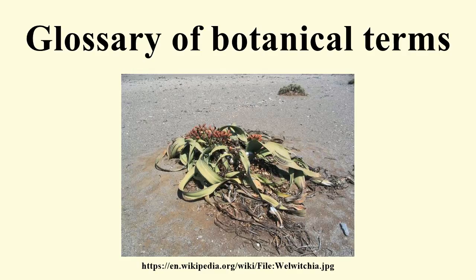Anisomery: the condition of having a floral whorl with a different number of parts from the other floral whorls. Anisotomous: branching with branches having unequal diameters, such as a trunk and its branch. Compare isotomous. Annual: a plant that completes its life cycle and dies within one year. Anastomose: branching then rejoining. Anterior: positioned in front of, towards the apex; distal.